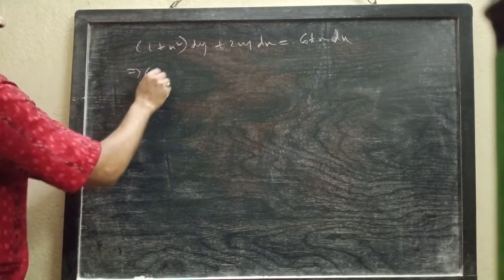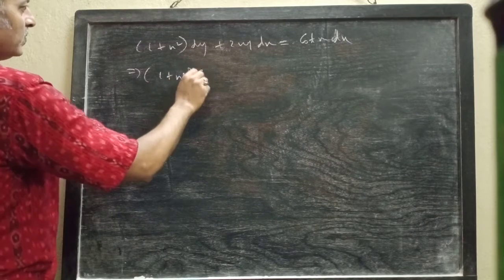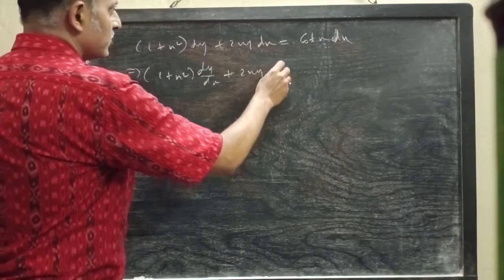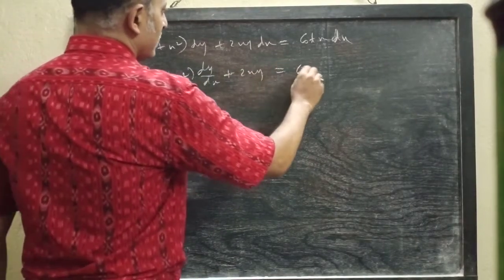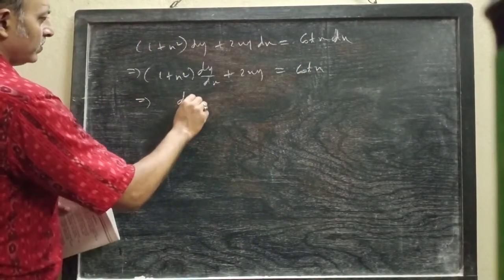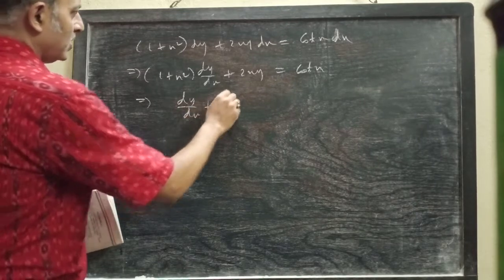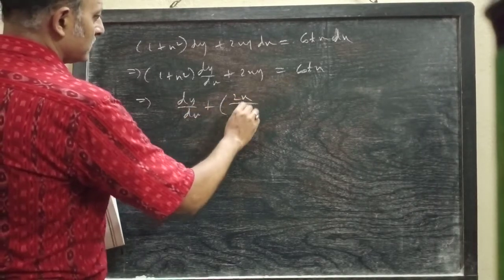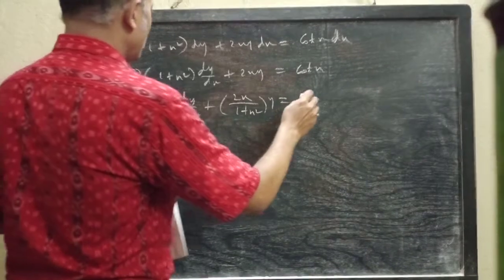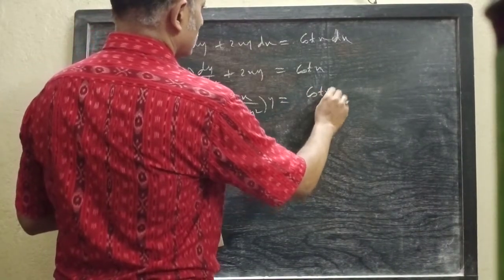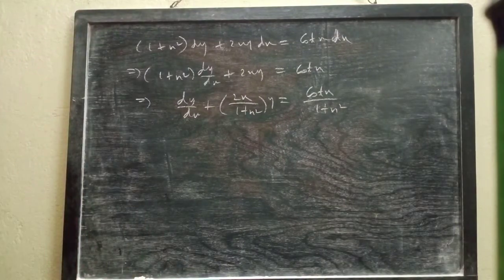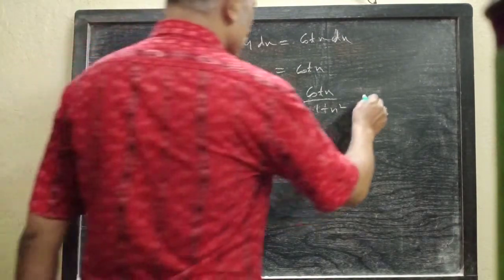We have (1 + x²) dy/dx + 2xy equal to 4x. Next we have dy/dx plus 2xy/(1 + x²) equal to 4x/(1 + x²). This is our equation (1).